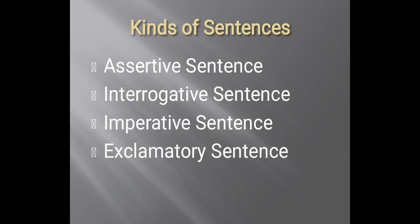This slide is about kinds of sentences. There are four main kinds of sentences: first is assertive sentence, second is interrogative sentence, third is imperative sentence, and fourth is exclamatory sentence.